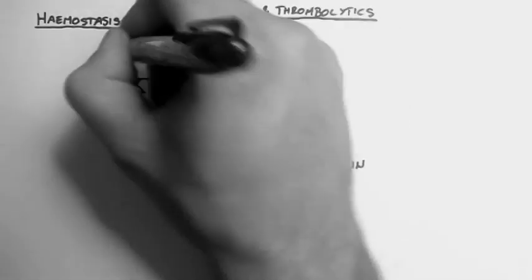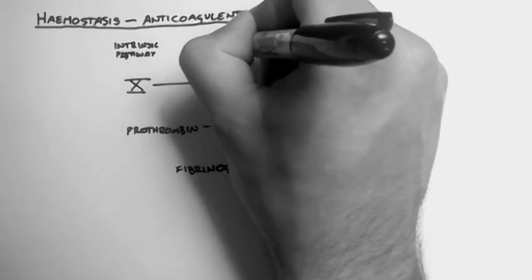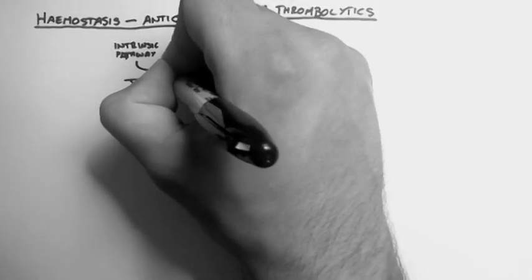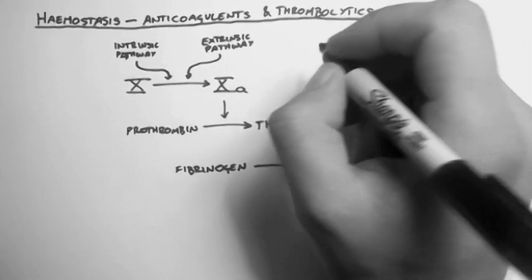We also looked at how factor X can be converted into factor Xa by the intrinsic pathway or the extrinsic pathway. Now we're going to have a look at how some drugs act on this pathway, but first of all we've got to add in another couple of elements.